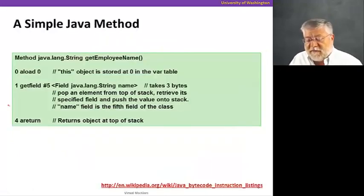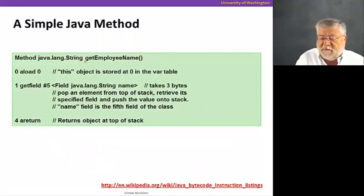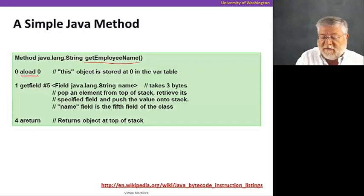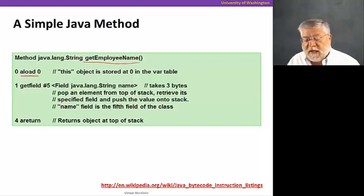Here's a simple Java method. This method might be from a program that deals with a database of employee names. This method is called GetEmployeeName and it has no arguments. It's just going to be running in an object that has access to the name of the employee. The first bytecode is a reference load, aload. Get the value of 'this' stored at variable zero in the var table and put that on the stack.